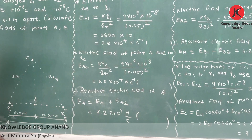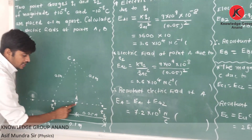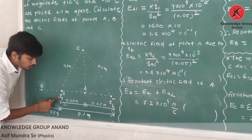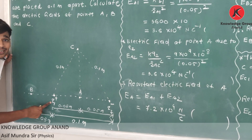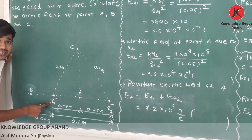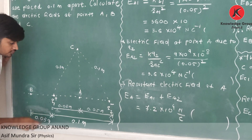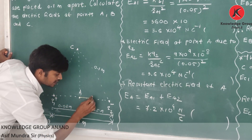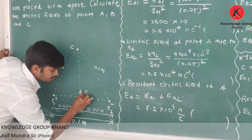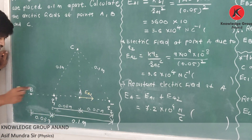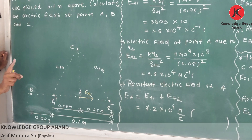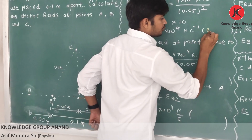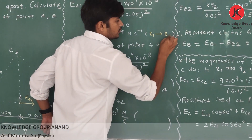Now think about the direction. See the figure. At point A, you have to find electric field due to q1. q1 is a positive charge. We know that due to a positive charge, electric field is radially outward. So due to this q1 positive charge, at point A, the electric field eA1 is directed outward — from q1 towards q2.